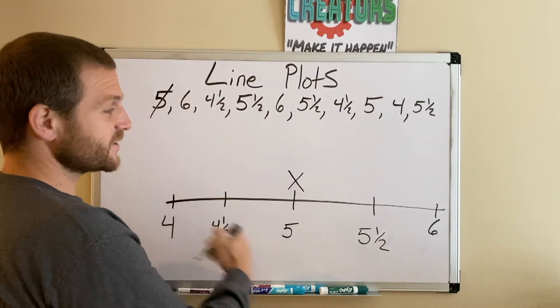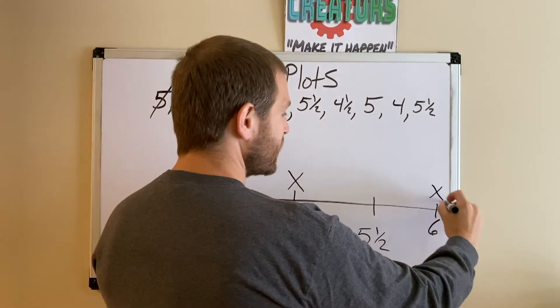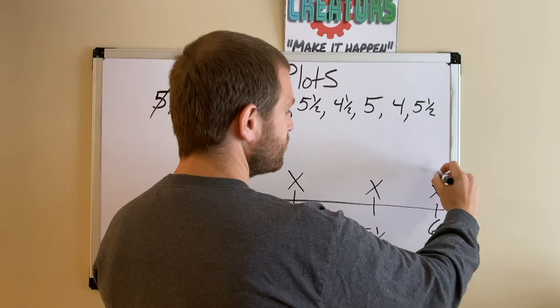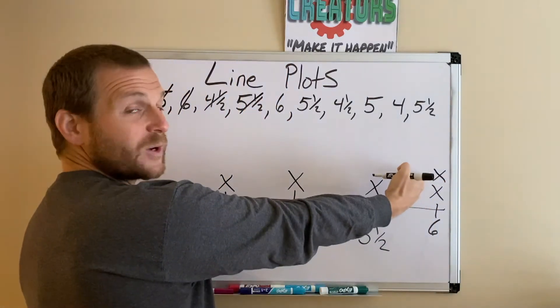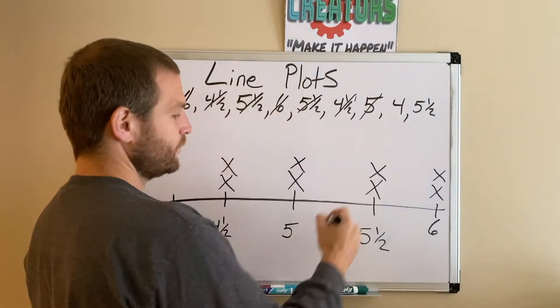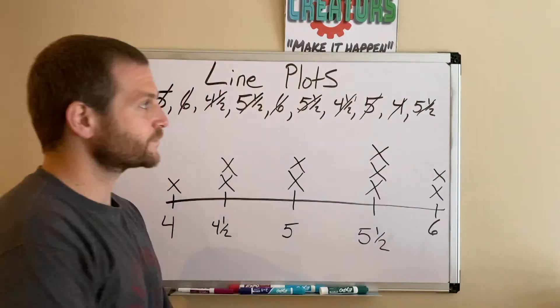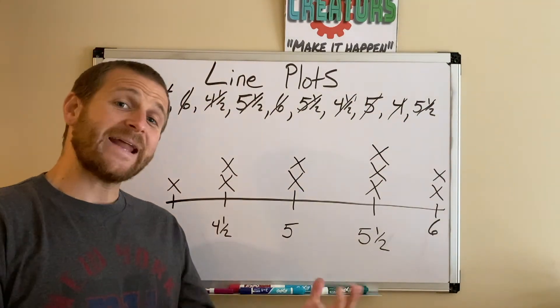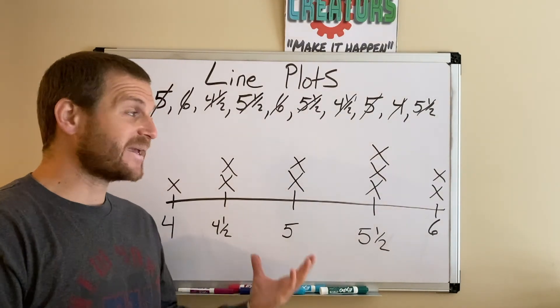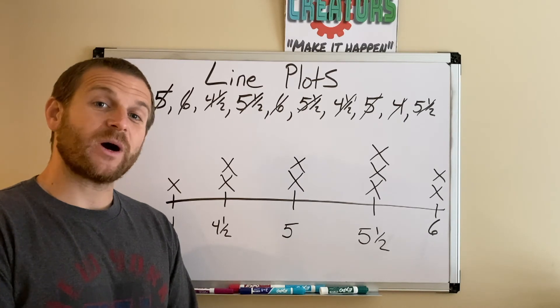My next one is 6, so I jump over to 6. Now that I have two, I stack them on top of each other. [continues plotting all data points] Now I've populated my line plot.